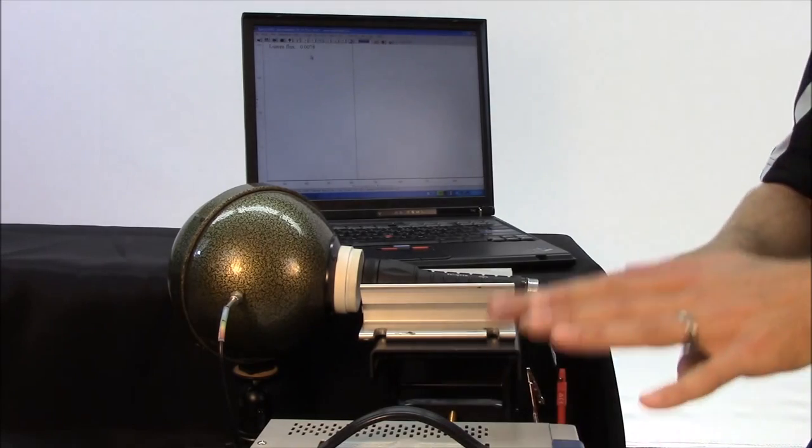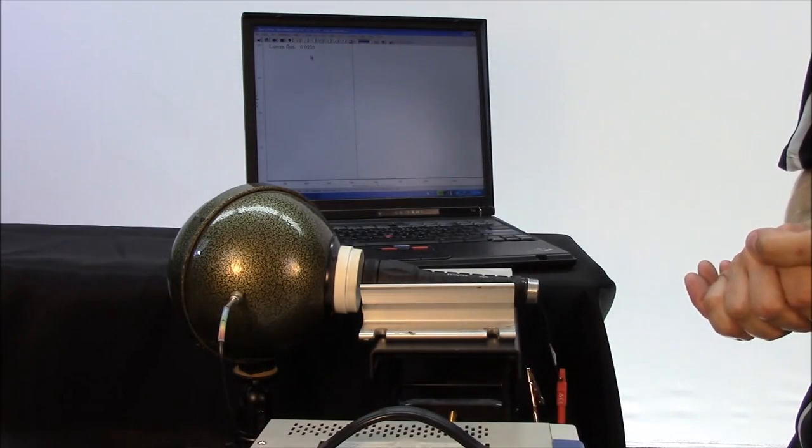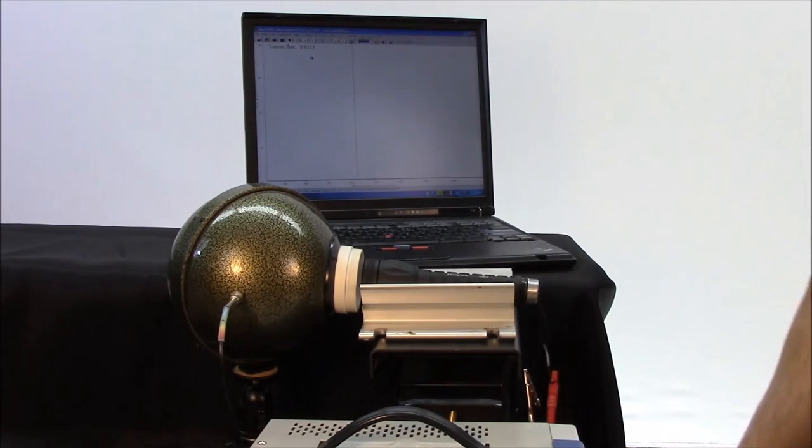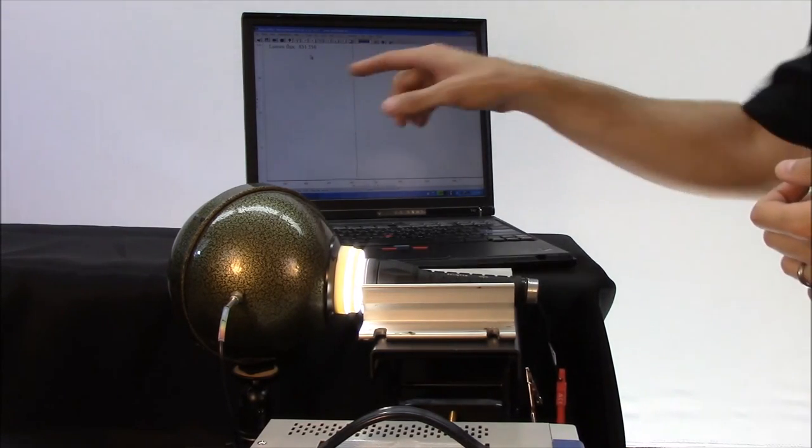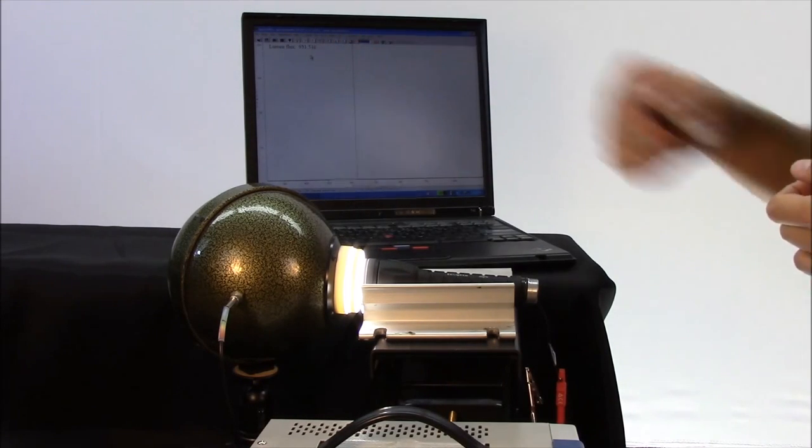So I'm going to turn on the power supply, and it is set to run it like it would normally run on a 3-volt system, on a Charlie body. It's going to run just over 900 lumens. And the computer output here shows right at about 935 it's running.